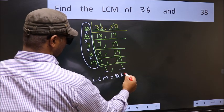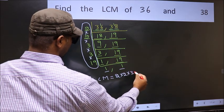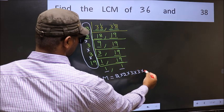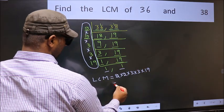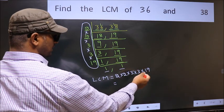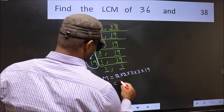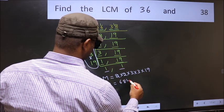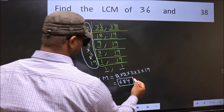That is 2 into 2 into 3 into 3 into 19. When we multiply these numbers, we get 684 is our LCM.